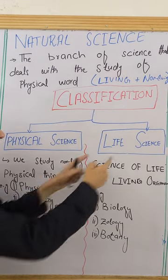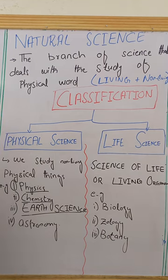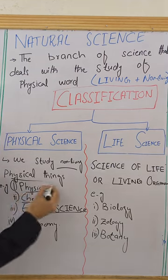Natural science is classified into physical science and life science. In physical science, we study non-living physical things.